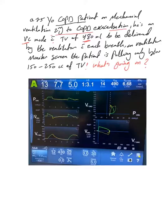And this image is just to show you something, but let's follow: 480 ml to be delivered by the ventilator with each breath. On the ventilator monitor screen, the patient is pulling only between 150 to 250 cc of tidal volume. What's going on?